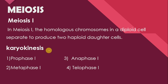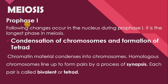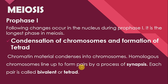Karyokinesis, that is the division of nucleus, takes place in four phases: Prophase 1, Metaphase 1, Anaphase 1, and Telophase 1. After the duplication of chromosomes in the interphase, the cell enters Prophase 1. Prophase 1 ko meiosis ka longest phase kaha jata hai. Number 1: condensation of chromosomes and formation of tetrad. Chromatin material condenses into chromosomes, homologous chromosomes line up to form pairs by a process of synapsis. Each pair is called bivalent or tetrad.